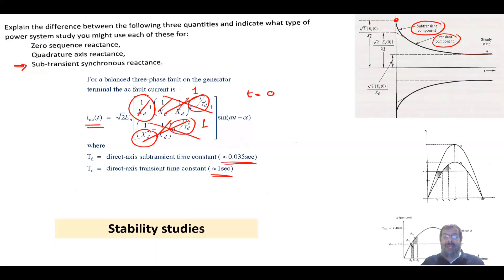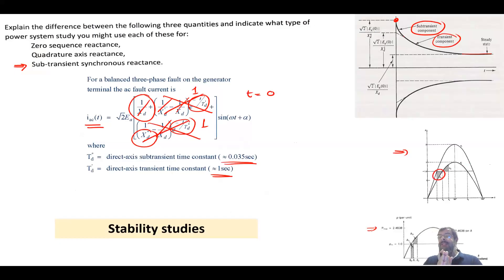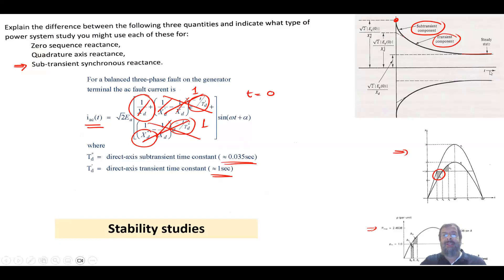One application where the sub-transient reactance is used is in stability studies. The equal area criterion shows that how quickly a fault is cleared determines whether the system remains stable or goes unstable. The fault must be cleared as soon as possible before the accelerating area expands beyond the decelerating area. If the system becomes unstable, the rotor accelerates indefinitely, synchronization is lost, and the result is a blackout.